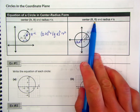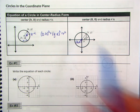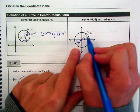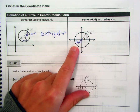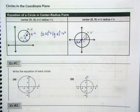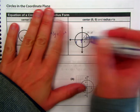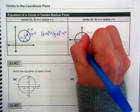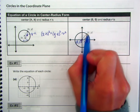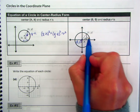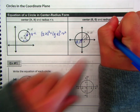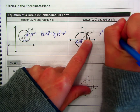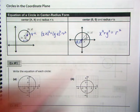Now with the center at (0, 0), we're still going to do x minus h, which would be 0, and that's why we end up with just x. So the center should be written as (0, 0) because it's at the origin. The difference between x and 0 and y and 0 would just be x and y, so this equation is just x² + y² = r², which is the radius squared.